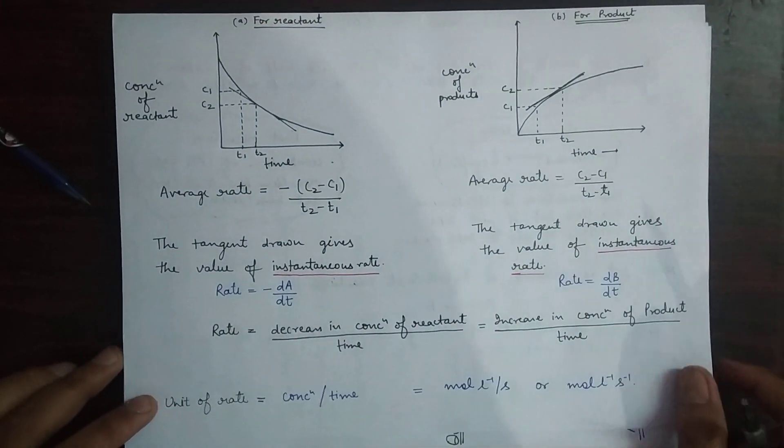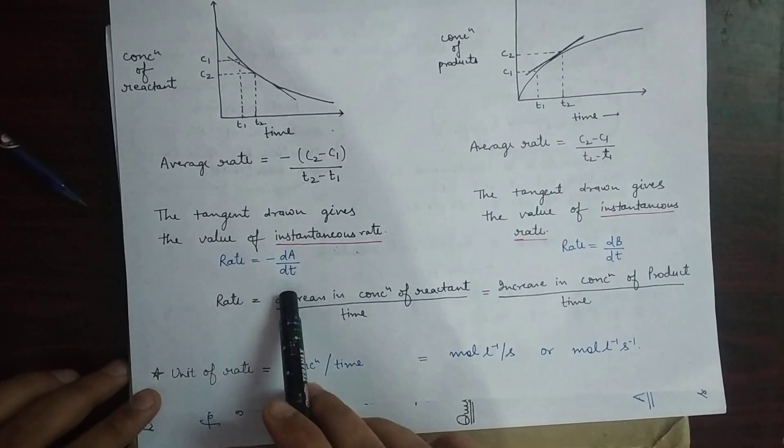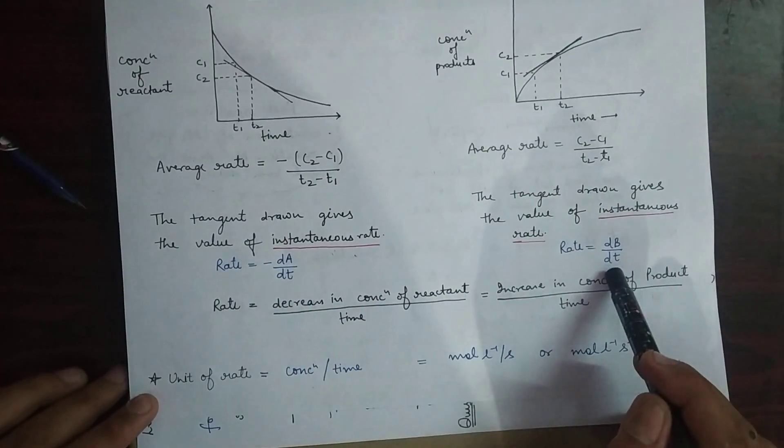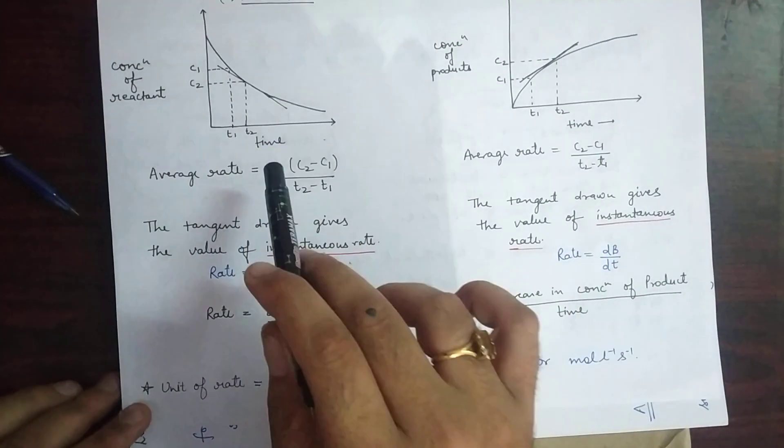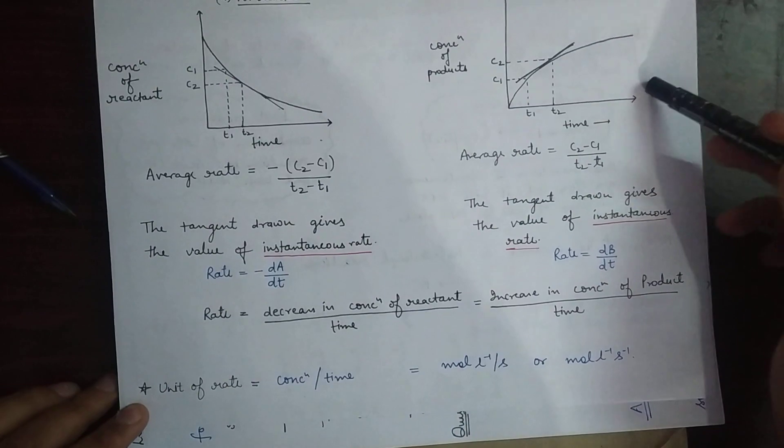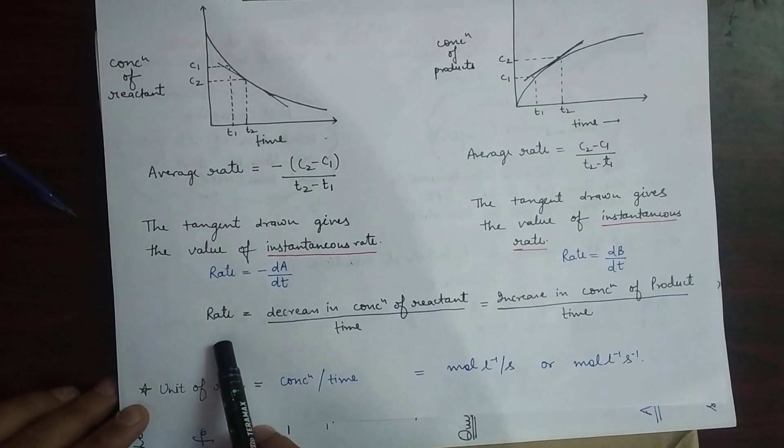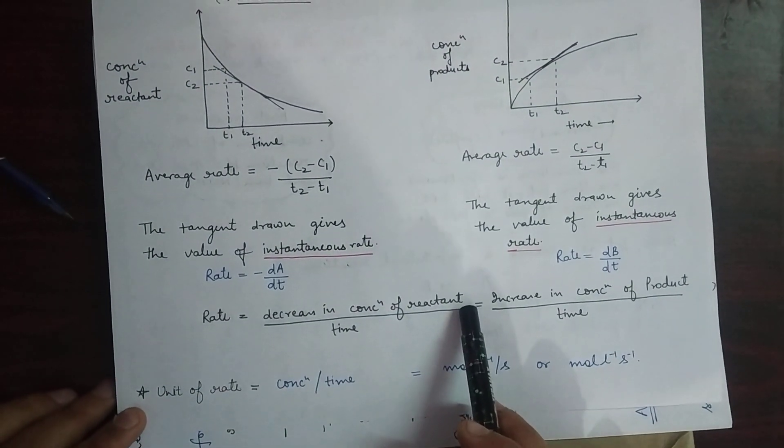So rate will be minus dA by dt for reactant, plus dB by dt for product. Minus shows the decrease in concentration and plus shows the increase in concentration. So rate can be defined as a decrease in concentration of reactant with respect to time, or increasing concentration of product with respect to time.